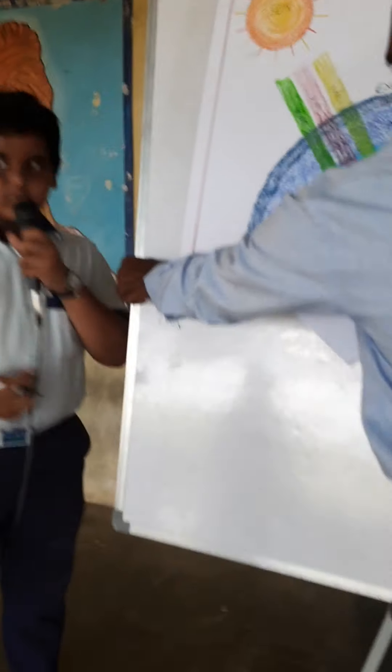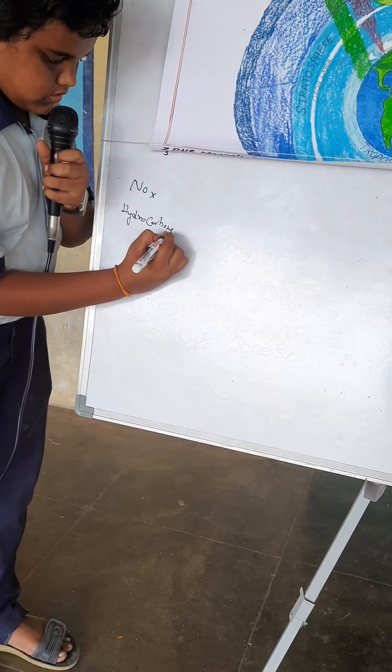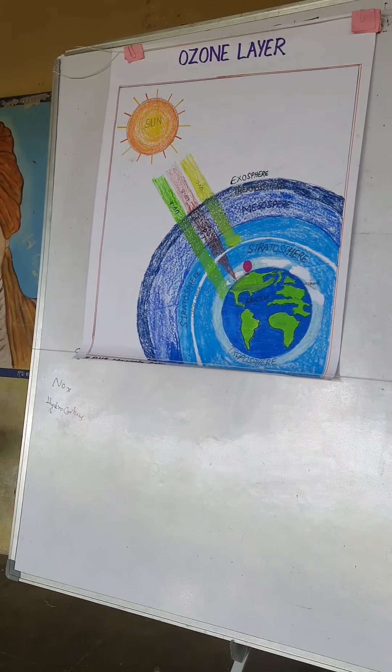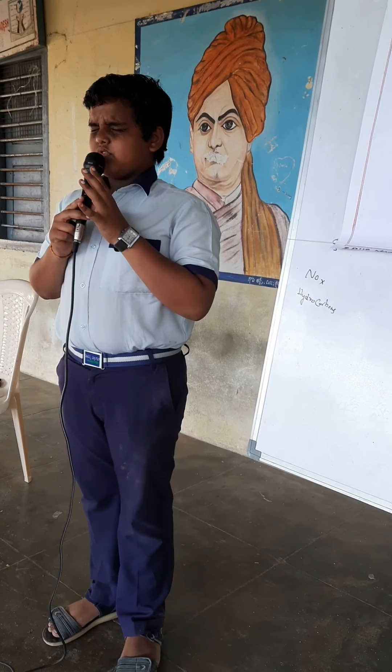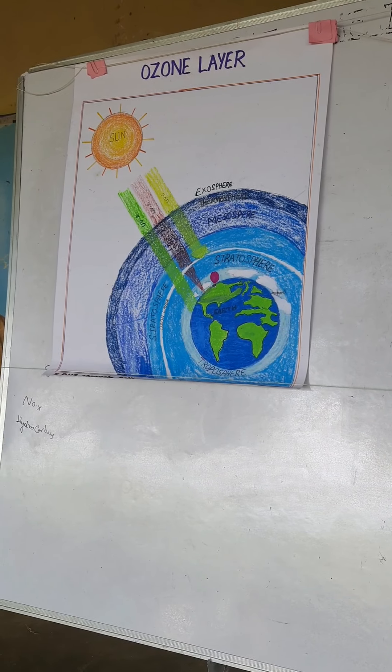Ozone is formed through heat and sunlight causing chemical reactions between carbon dioxide and nitrogen oxides (NOx) and volatile organic compounds (VOC), which are known as hydrocarbons. Ozone layer was discovered by French scientists Charles Fabry and Henry Buisson in 1913. Ozone is a pale blue gas with a chlorine-like smell. It is found in the stratosphere around 15 to 30 kilometers above the earth's surface, covering the entire world and protecting life by absorbing harmful ultraviolet radiation from the sun.